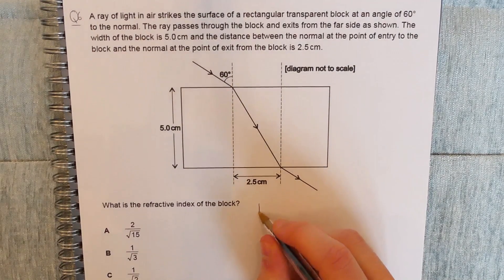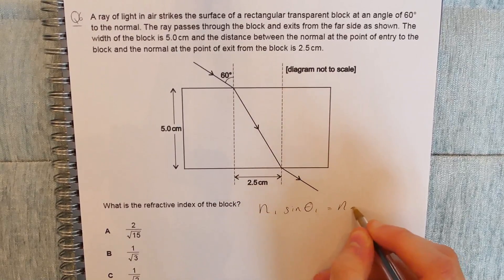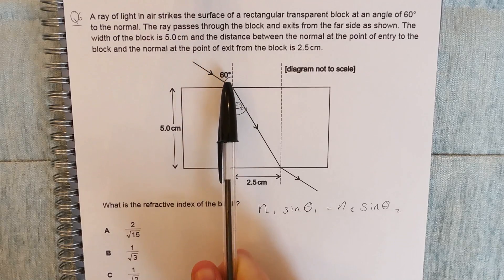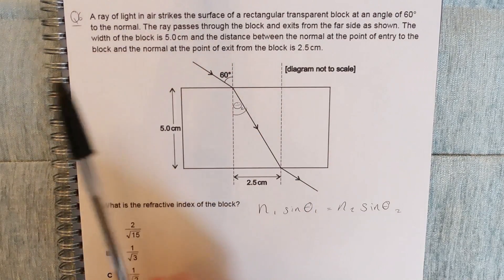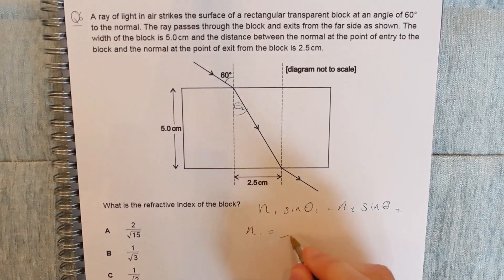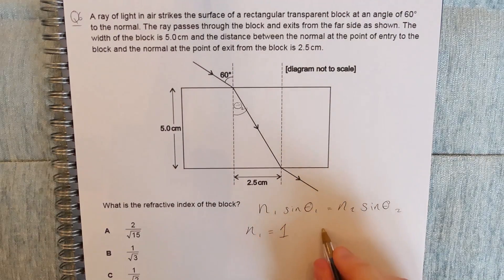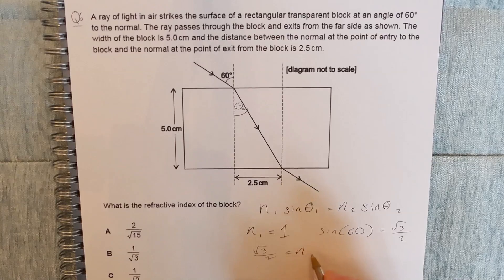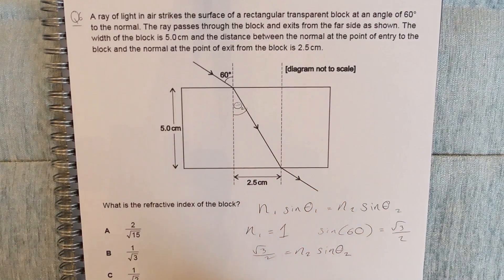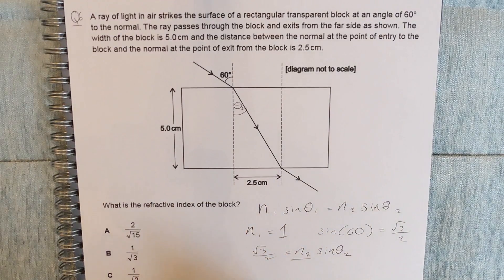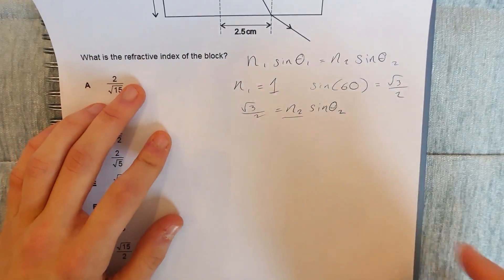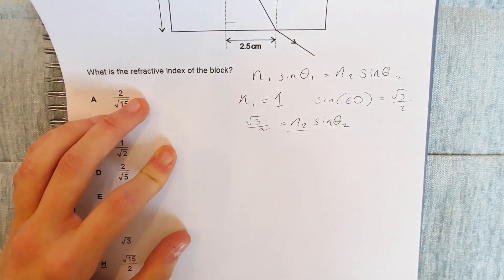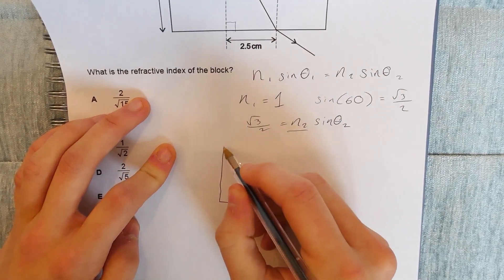Okay, so we know in this question that we're going to need Snell's law. So that's the formula N1 sine theta 1 is equal to N2 sine theta 2, where in this instance sine theta 2, or theta 2 in that case, is here and sine theta 1 is taken from here. So N1, we're told that the block is in air, so N1, the optical density of air, is equal to 1. Now sine theta 1 is equal to sine 60, and that is equal to root 3 over 2. So therefore we know root 3 over 2 is equal to N2 sine theta 2. Okay, so the ultimate thing we want to find is N2, so that implies we should be able to deduce what sine theta 2 is. So we can do this using some of the lengths that we have.